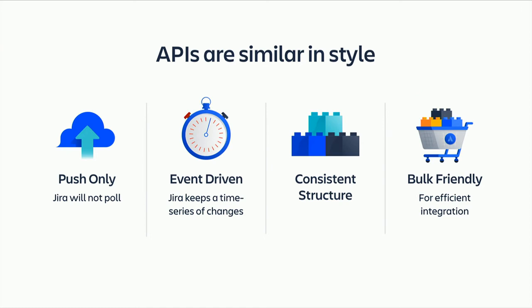Another thing we support is tagging — when you send data in, you can tag it. For example, you could send in all the builds and tag them as associated with a particular repository. This allows you to — in this day of GDPR and the need to clean up — if your repository has been deleted, send one call into Jira and say: delete every build I ever told you that was associated with that repository.